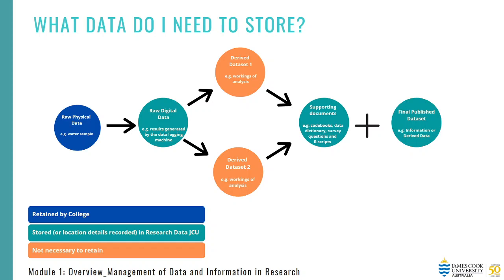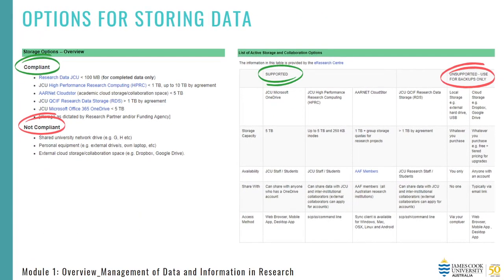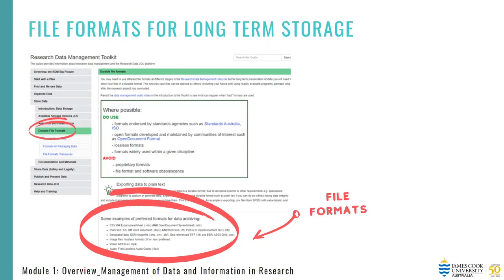All of this should be stored in line with the institutional and/or funding body retention policies and any contractual agreements, which for publications is a minimum of five years. Options for storing your data include Research Data JCU, the HPRC (high performance research computing), Microsoft OneDrive, CloudStore, etc. I strongly recommend only the JCU supported storage and collaboration options. Dropbox and Google Drive are unsupported options and are therefore only to be used as backups. You also need to think about file formats — it's important to use machine readable file types that will not be obsolete in five years time, as that would mean files cannot be opened or reused in the future.